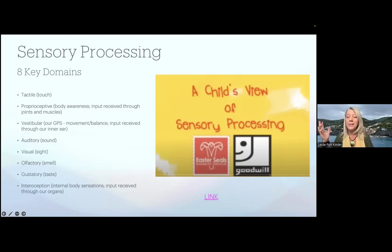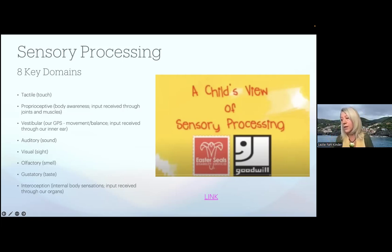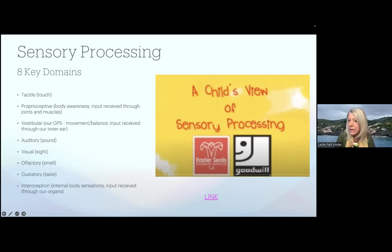There are eight key domains. Tactile touch — we receive that information through our skin. With proprioceptive input, it's kind of a hidden sense, and that input is received through muscle receptors in our joints and muscles. Vestibular is another hidden sense — that input is received through the semicircular canals of our inner ear, kind of like our GPS. And interoception input is received through our internal organs.